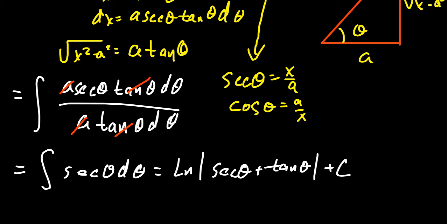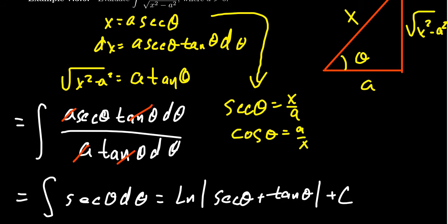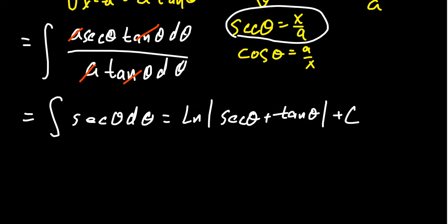And so then we want to translate it back. We need to know secant and we need to know tangent. Now, secant, we talked about before. Secant is going to be, well, x equals a secant, so therefore secant is x over a. We're going to make that substitution. Natural log and that's the value of x over a.